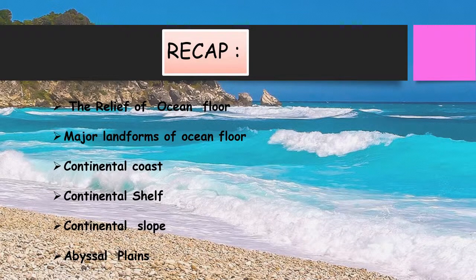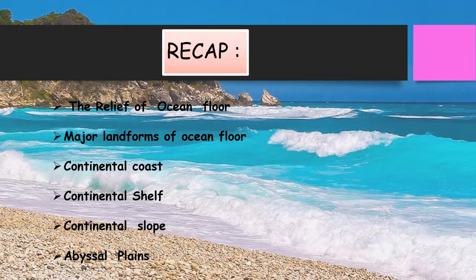We learnt about the relief of the ocean floor — the land submerged below the oceanic water is called the ocean floor. The relief of ocean floor is decided by the depth from the seafloor and the shape of the land there. The ocean floor relief consists of all submerged landforms. We had looked at the sequence of landforms including the continental coast, continental shelf, continental slope, and abyssal plains.